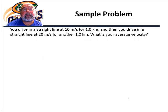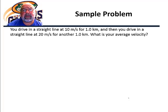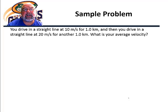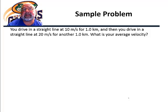Welcome back. I have a sample problem here to show you how average velocity differs from the average of the velocities. We're given a problem where we drive in a straight line for 1 kilometer at 10 meters per second, then continue in a straight line at 20 meters per second for another kilometer. What is our average velocity? It's easy to see that the average of our velocities — the average of 10 and 20 — is 15 meters per second. But I'm going to show you that that isn't what we get for our average velocity; it's something else.